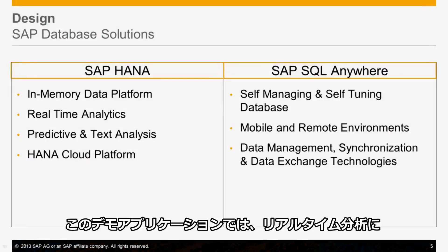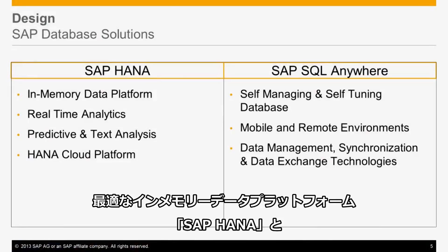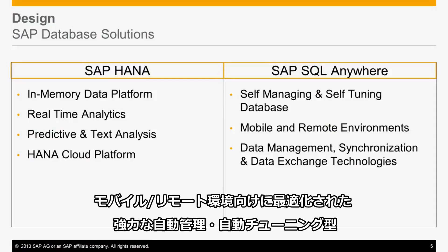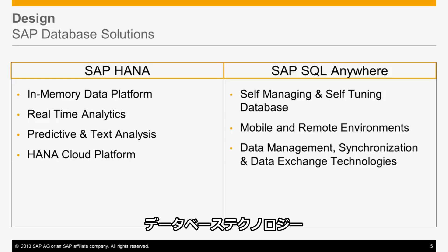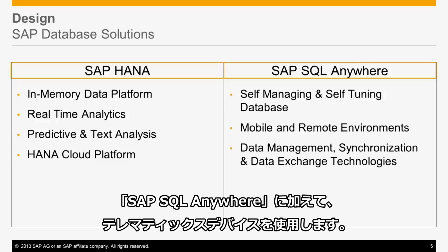The application uses two important pieces of SAP technology: SAP HANA, the in-memory data platform that is best suited for performing real-time analytics, and SAP SQL Anywhere, a powerful self-managing, self-tuning database technology optimized for mobile and remote environments. The application also makes use of a telematics device that I will describe later on in the demo.